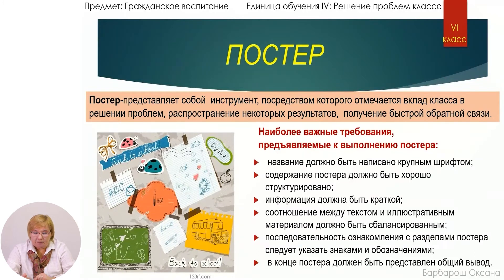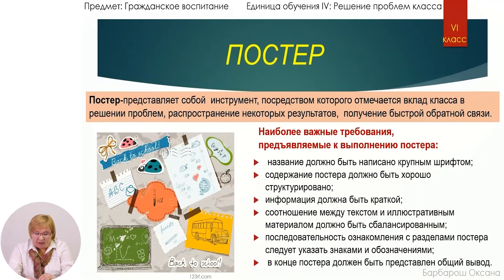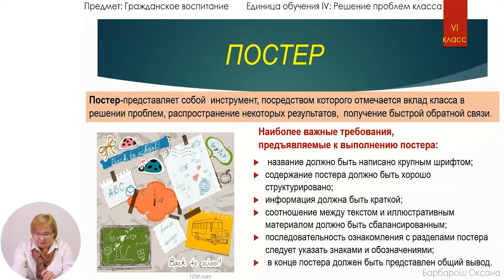В постере должны быть отражены действия и результаты. Основное содержание — текст и изображения — оформляется в виде колонок, как в газетах. Самая важная информация должна размещаться на одном уровне. Информация должна быть краткой. Соотношение между текстом и иллюстративным материалом должно быть сбалансировано. Последовательность ознакомления с разделами постера указывается знаками: стрелками, значками, цифрами. В конце постера должен быть представлен общий вывод.